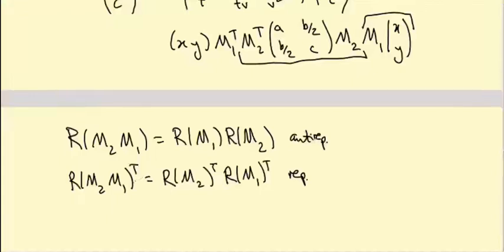The basic idea is that instead of thinking of a, b, c as entries of a vector, we're thinking of them as projections onto the coefficients of the quadratic form. That's how this transposed representation describes how SL(2,C) acts on those projections.